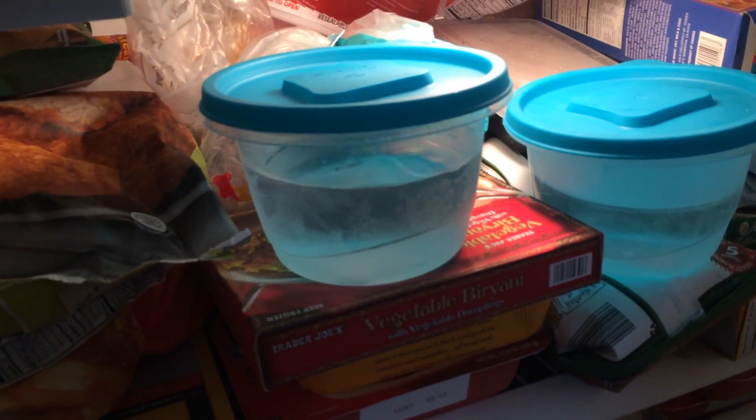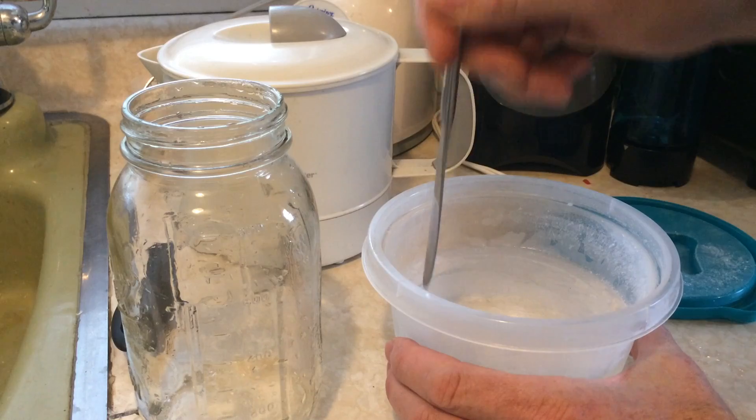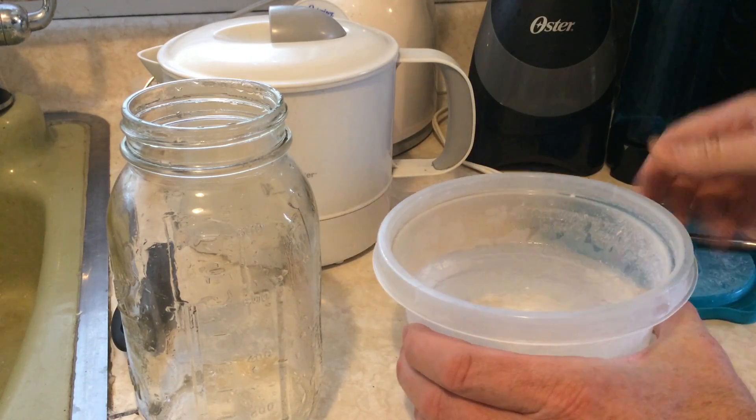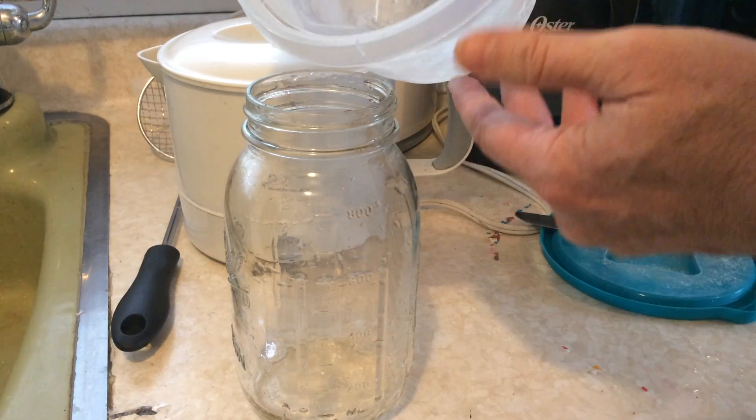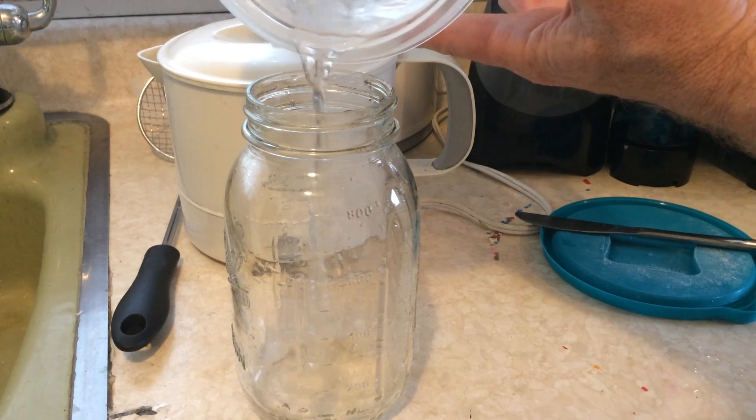It gets less and less effective as you do more and more passes through the freezer. So you want to do at least two times. You can do three or four if you're really paranoid. And then you should have pretty clean water there at the end.